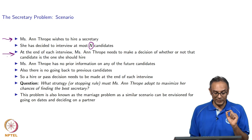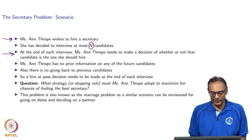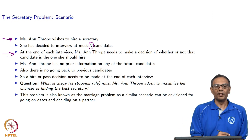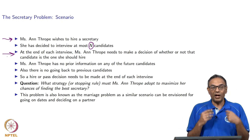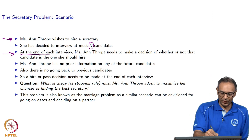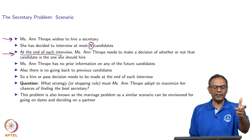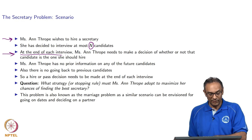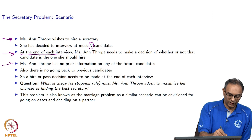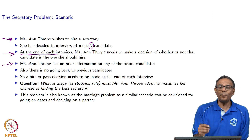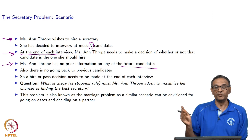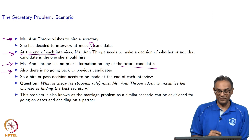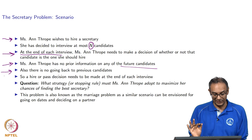We are looking at Miss Anne Thrope deciding whether or not to hire each candidate she interviews. When an interview ends, she must decide: do I pick this candidate or not? She cannot see who is coming later and cannot go back to someone before. So essentially, Miss Anne Thrope has no prior information about who is going to come in the future — she does not have their resumes. Also, she cannot go back on previous candidates: once she says no, that person is out.